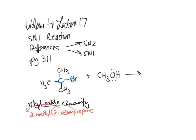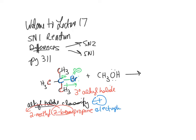Most people would put 2-bromo before 2-methyl because B comes before M in the alphabet. Looking at our alkyl halide, that carbon is bonded to three carbons, so that is a tertiary alkyl halide. If you put in your dipole moment, you'd see that the dipole pulls electrons to the bromine, making the carbon a little delta positive. So that alkyl halide is your electrophile.